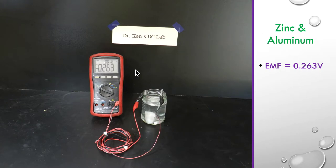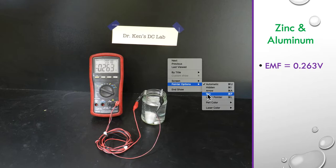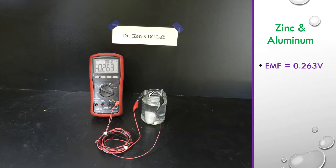And our final one is our zinc and our aluminium so we've see things have changed a fair bit here so there's our zinc. And our aluminium and our voltage the lowest reading so far at 0.263 of a volt.